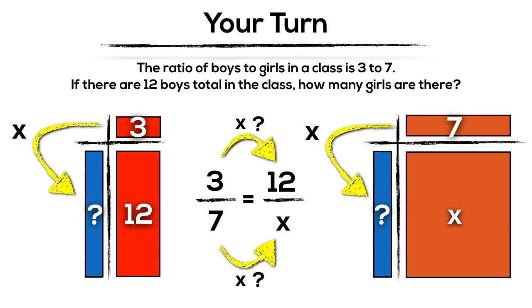So in this case, if we think backwards and we take 12 and we divide into three groups, we end up with 4, and thus we're going to take 7 times 4 as well to determine our total of 28 girls in the group.